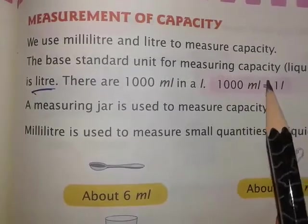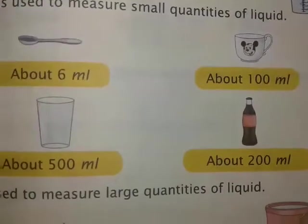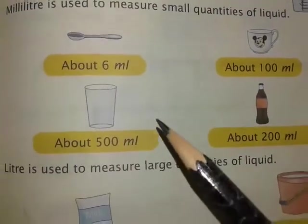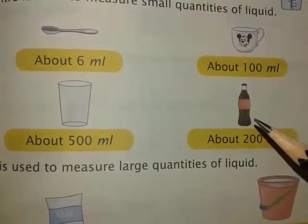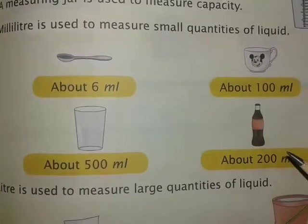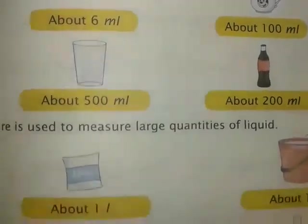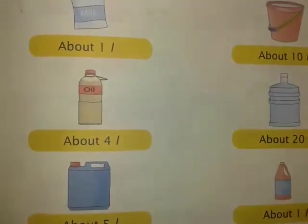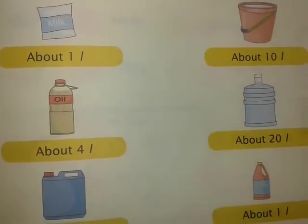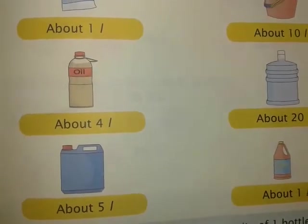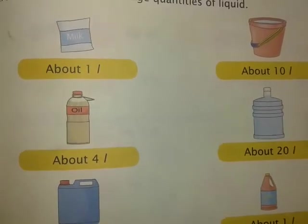You can see in the book some pictures. A spoon, glass, cup, and this small bottle of Coke - these are all smaller quantities, and the measurement is written here in milliliters. Whereas some larger quantities like a packet of milk, bucket of water, and water gallon are given - these are all larger quantities and the measurement is done in liters.